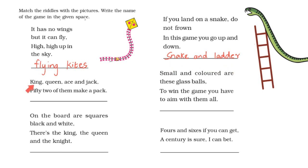The next riddle: King, Queen, Ace and Jack 52 of them make a pack. A pack of playing cards has 52. It also has King, Queen, Ace and Jack. So I write playing cards.